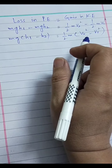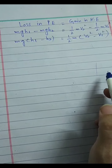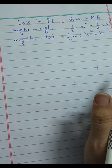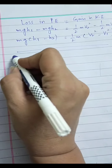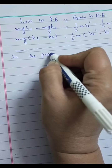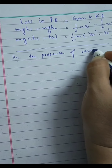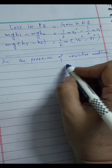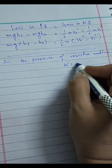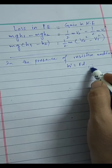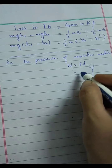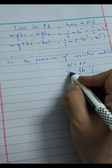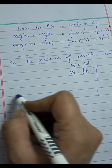But in the actual case, when a body falls through a resistive medium such as air, a frictional force acts on it. Work done against friction equals force times distance: W = FD. Since the body falls through height h and the frictional force is F, the work done against friction is FH.